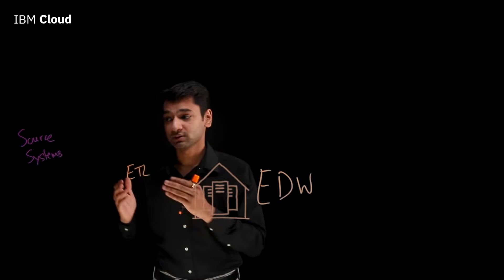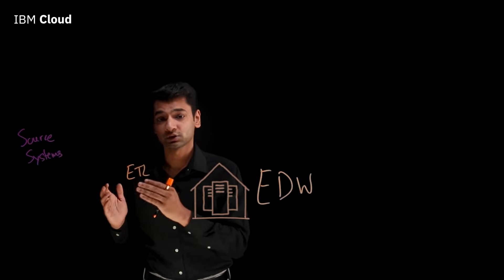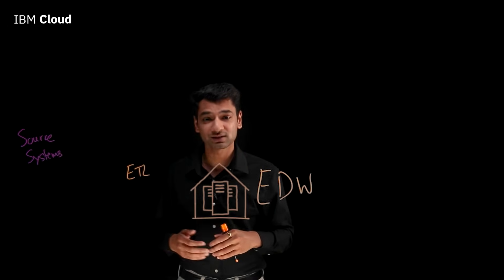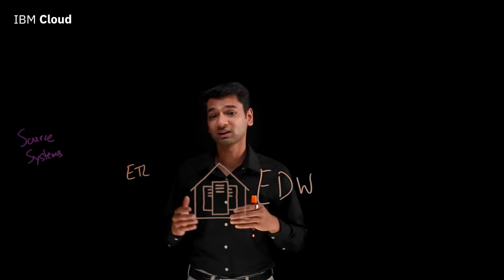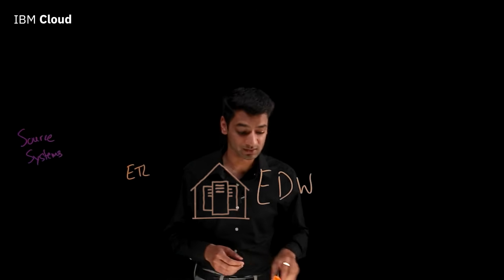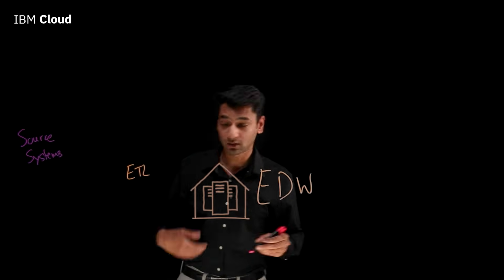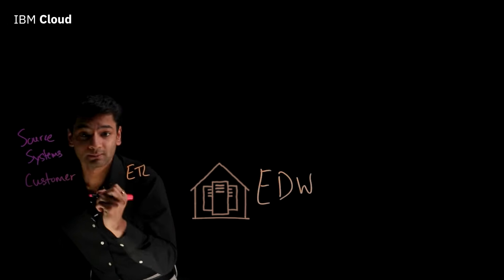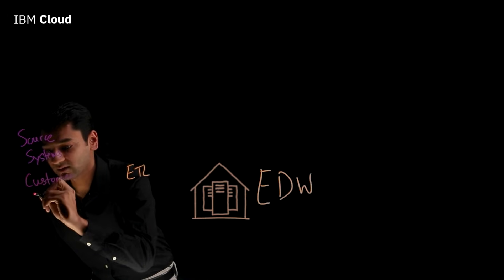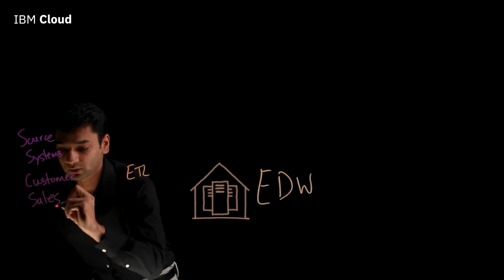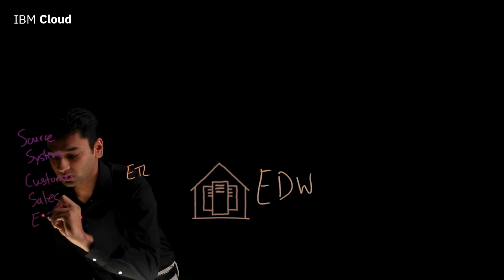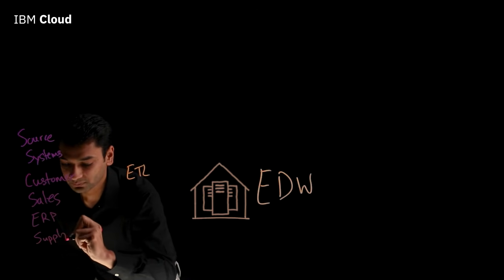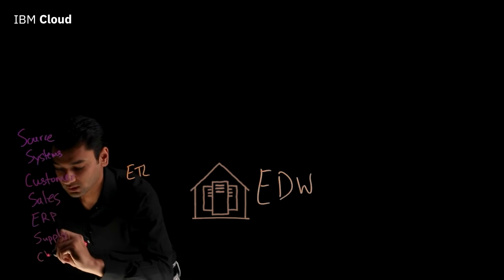Data that's in our source systems can be in different types. It could be transactional systems, relational databases, and they can cover a wide variety of business domains. The data could cover things like customer data from our CRMs, sales data, data from our ERP systems, supply chain data, and the list goes on.